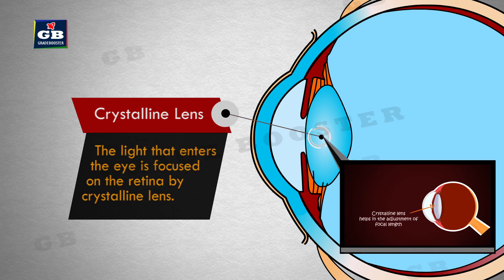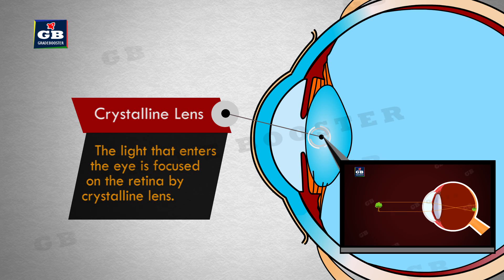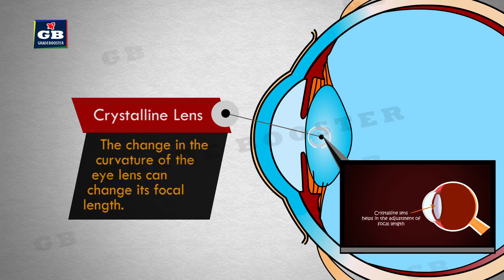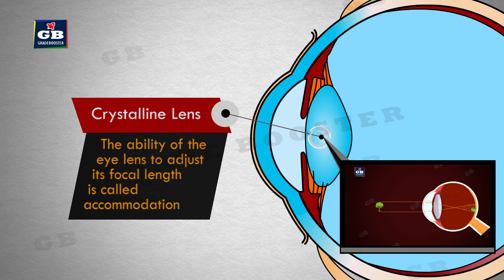Crystalline lens. The light that enters the eye is focused on the retina by the crystalline lens. The eye lens is composed of a fibrous, jelly-like material. The change in the curvature of the eye lens can change its focal length. The ability of the eye lens to adjust its focal length is called accommodation.